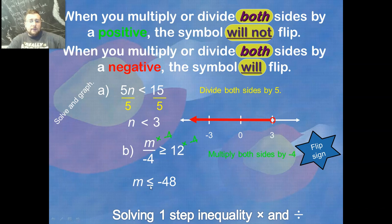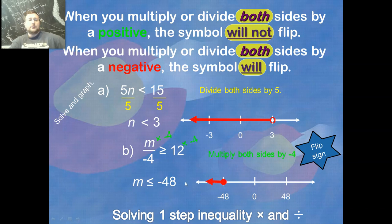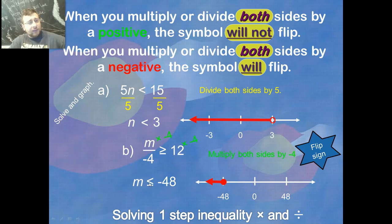12 times negative four is negative 48. What about the inequality sign? It should flip — so instead of greater than or equal to, we get less than or equal to. The equal stays. So m is less than or equal to negative 48. On the number line, negative 48 would be included because of the equal sign, and everything smaller than that is shaded.